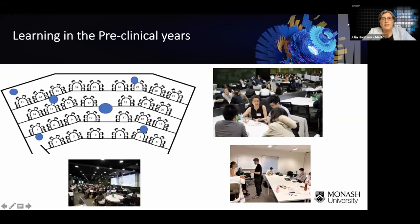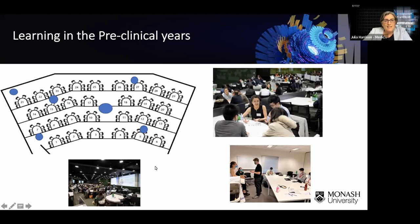The on-campus learning covers the first two years. Traditionally university education involved sitting in lecture theatres, but that's changed. At Monash we have large flat floor teaching spaces where up to 150 students sit in small groups and discuss patient cases, explain things to each other, and try to solve problems together. There are hands-on tutorials, students practicing how to examine a patient, and a mix of in-person and online education resources. Since COVID we've been working hard to find the best balance.